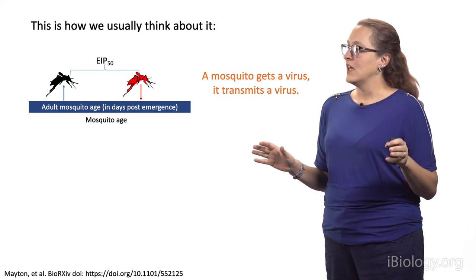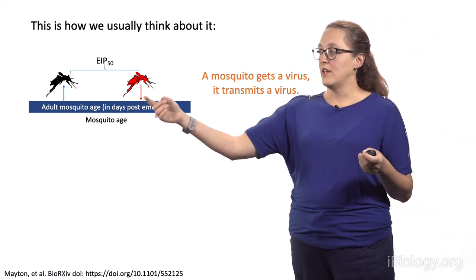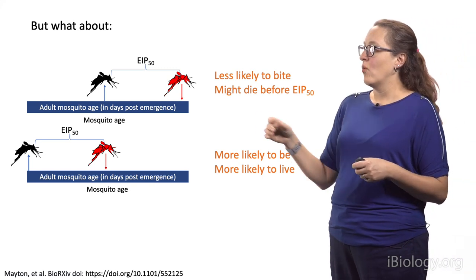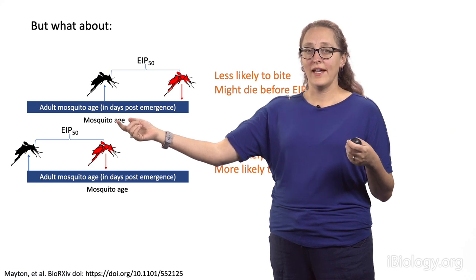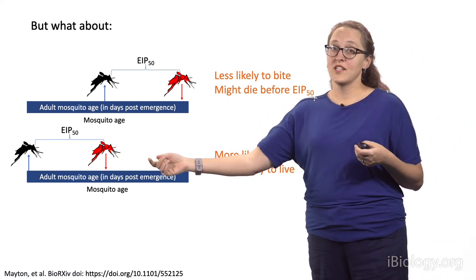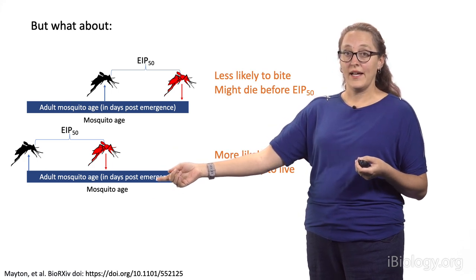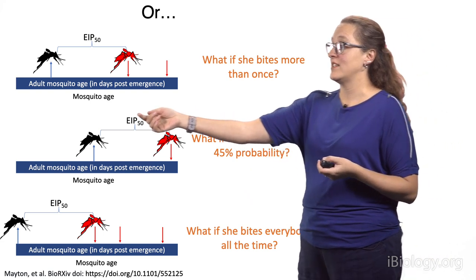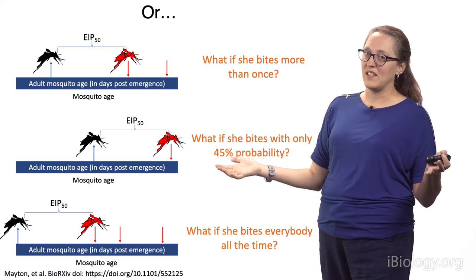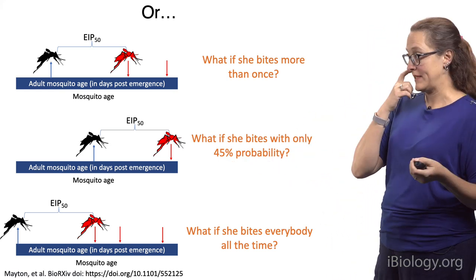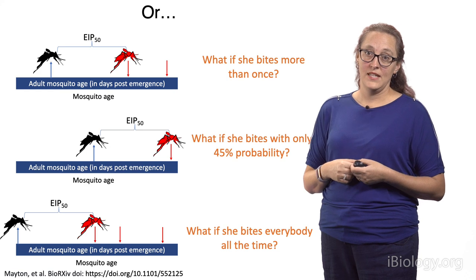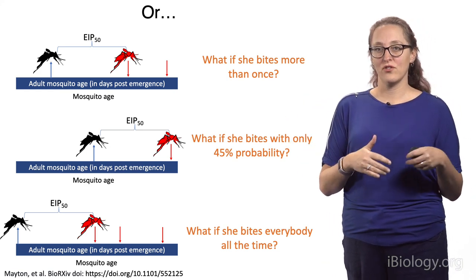Graphically, we usually think of things as: a mosquito gets a virus, some time passes, and then it transmits. But what if that mosquito got it later? She might be less likely to bite, or might not live long enough to transmit. What if she got it earlier? Then she has plenty of time to transmit and may be more likely to bite. What if she gets it early enough that she bites more than once after the extrinsic incubation period? Or what if she gets it older and only bites with a probability of 45%? These are things we cannot account for in the traditional vectorial capacity equation.